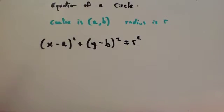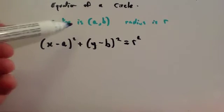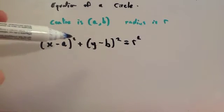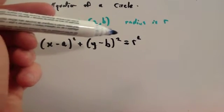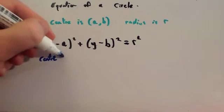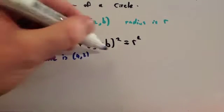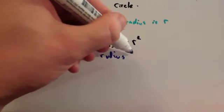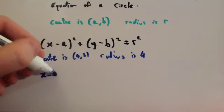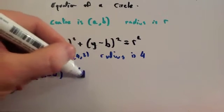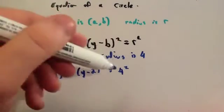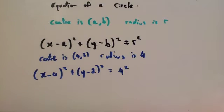In this video we're going to look at the equation of a circle. If you've got a circle that has a centre at (a, b) and a radius r, the equation of the circle is (x minus a) squared plus (y minus b) squared equals r squared. So if the centre is (4, 2) and the radius is 4, then the equation of the circle would be (x minus 4) squared plus (y minus 2) squared equals 4 squared, which you could also write as 16.